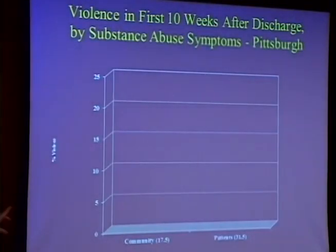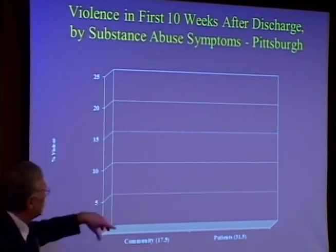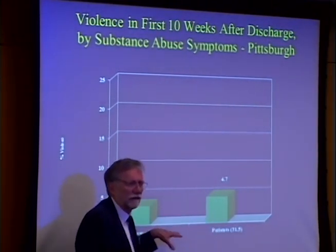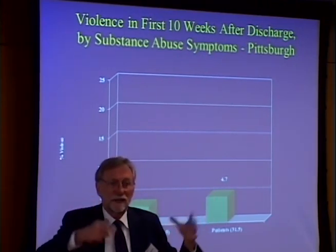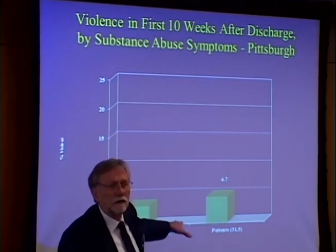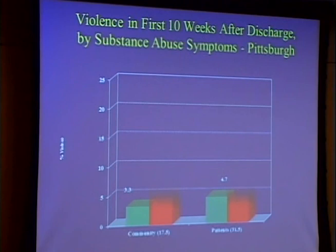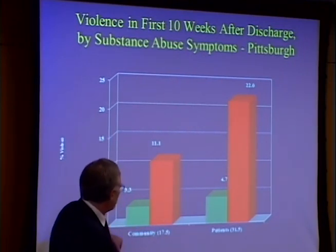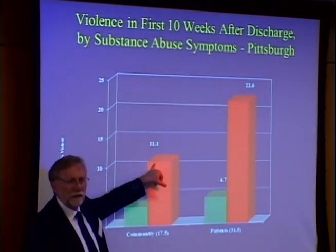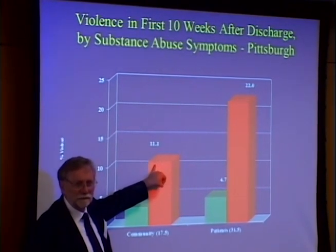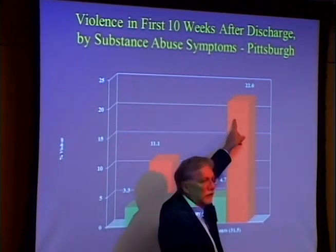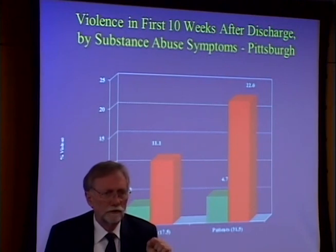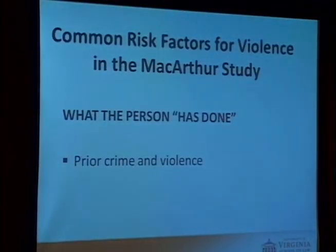Substance abuse disorder showed a striking pattern. Patients without any symptoms of substance abuse had a violence rate of 4.7%, not statistically different from the community rate of 3.3% — meaning mentally ill patients who were not abusing substances were as safe as their non-mentally-ill neighbors. But for those with at least one symptom of alcohol or drug abuse, the community rate rose from 3% to 11%, and the patient rate doubled to 22%. If your brain already has a tenuous grasp on reality, further scrambling it with substances dramatically increases violence risk.